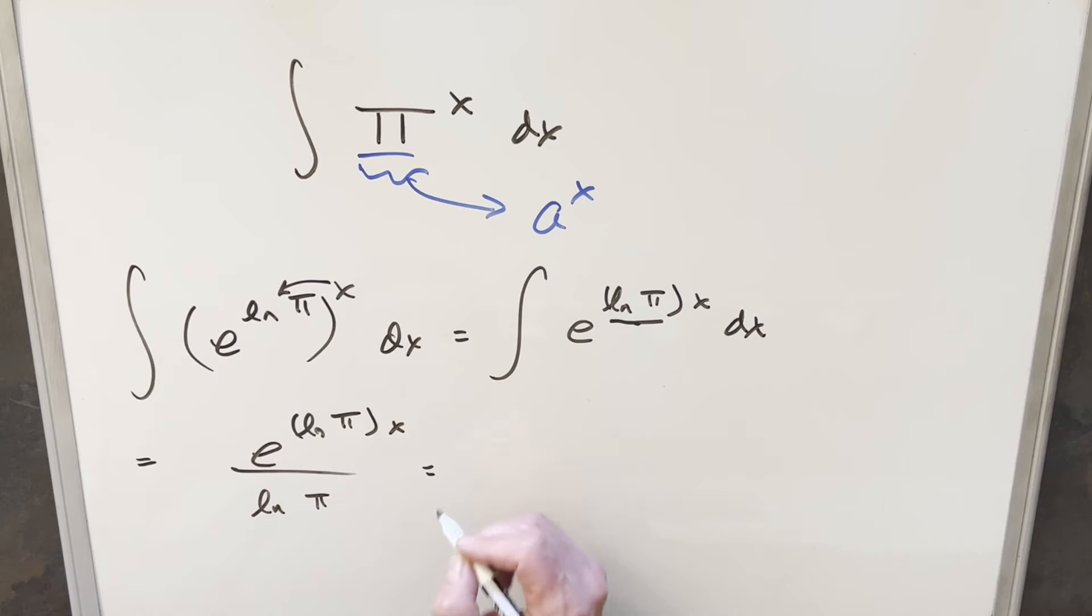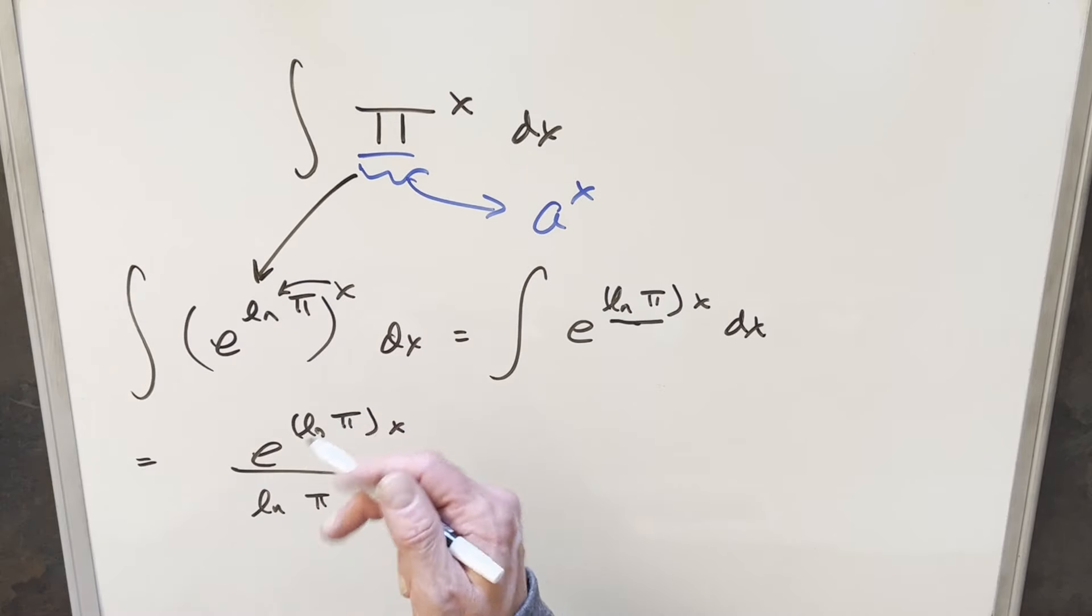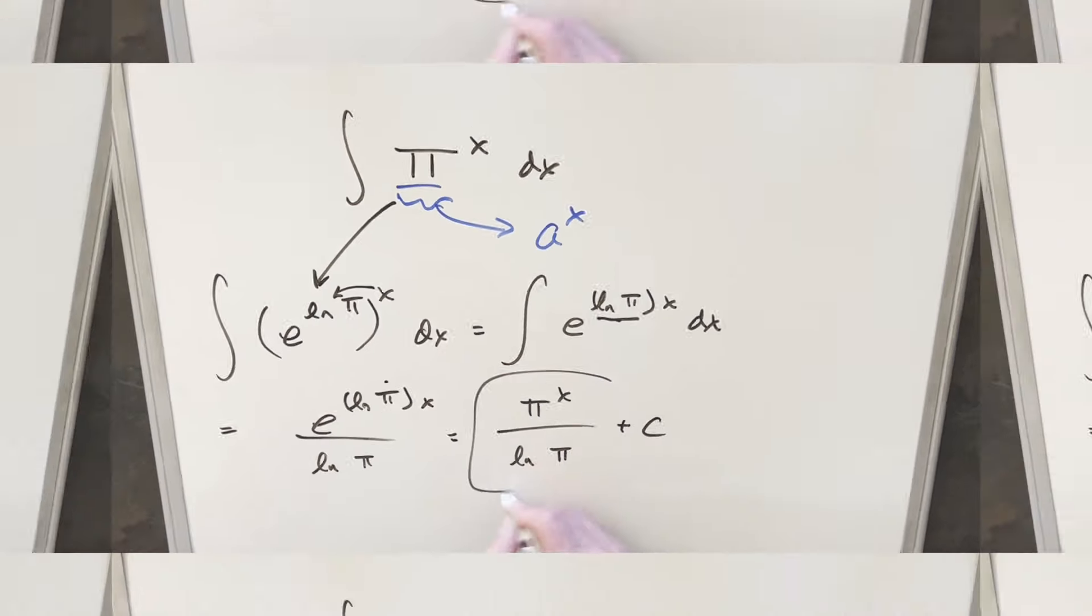And then here, this is basically done, but it's kind of polite to put it back in the original form. I don't know why. It's just kind of tradition, because we went from here to here. We wrote it this way. What we can do is just put it back and make it look like the original problem, because this thing here is just pi to the x. So for my final solution, we'll write this as pi to the x over ln pi plus c, and that's it.